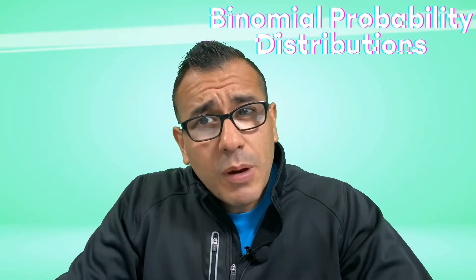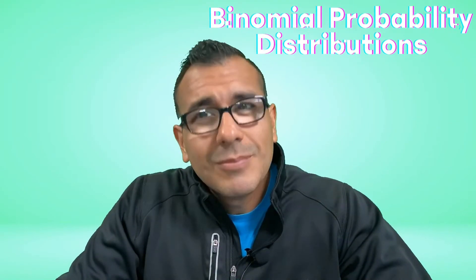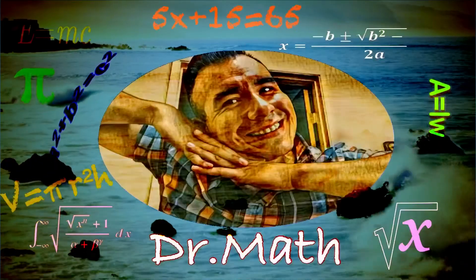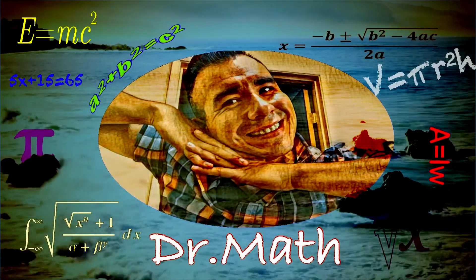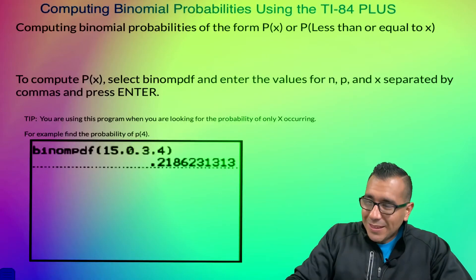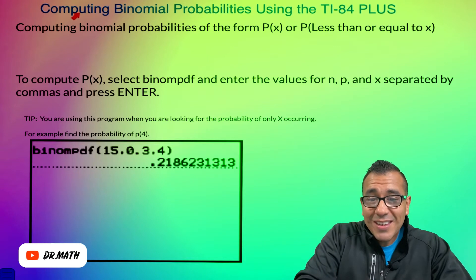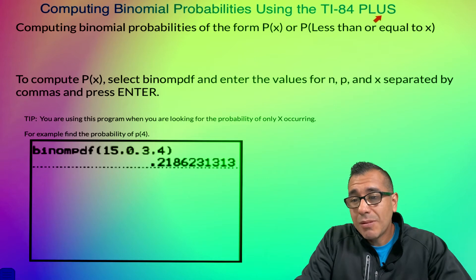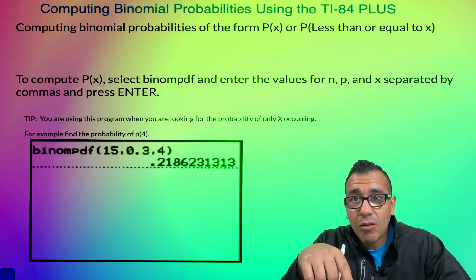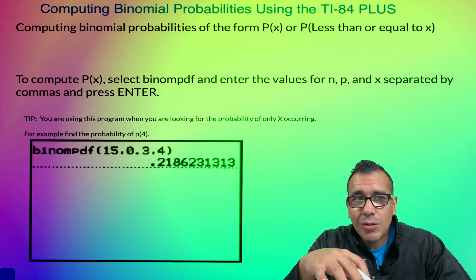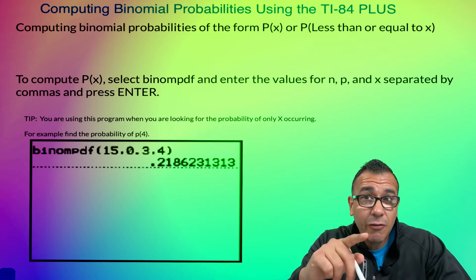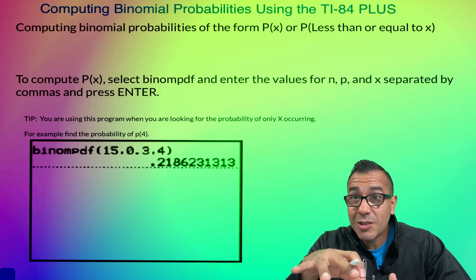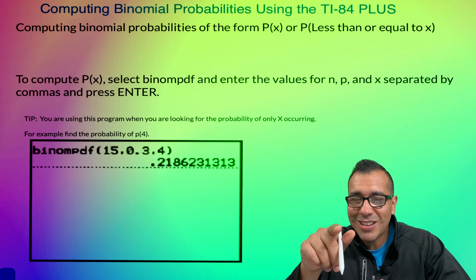Are you confused about binomial probability distributions? You came to the right guy. All right, Mathletes, so what I want to focus on today is how to calculate binomial probabilities. We're going to use the TI-84 Plus or the GraphinCalc app. I'll probably use the app because it's free and more accessible, and if you have the calculator, the steps are pretty much the same.